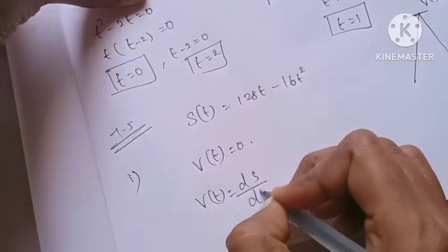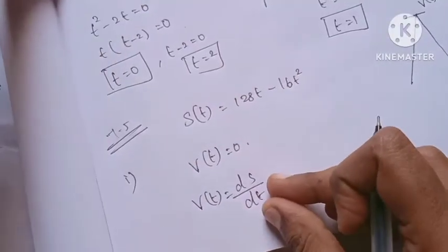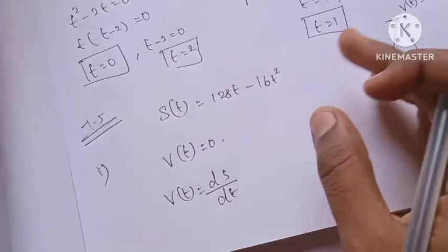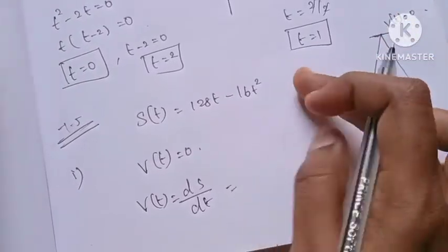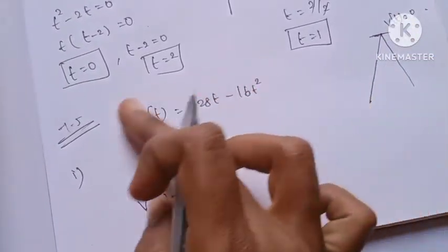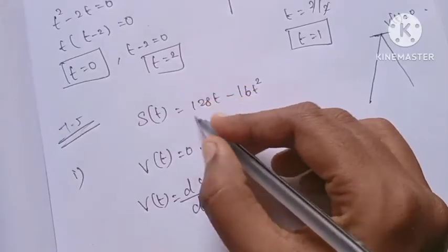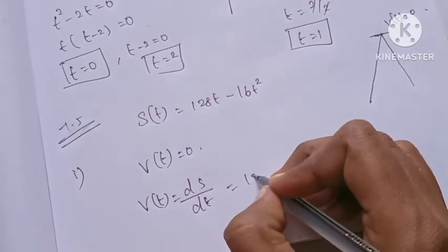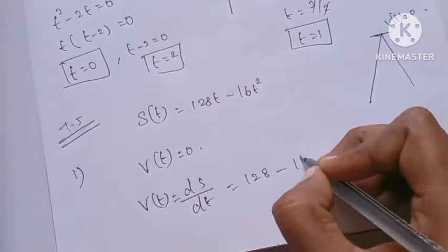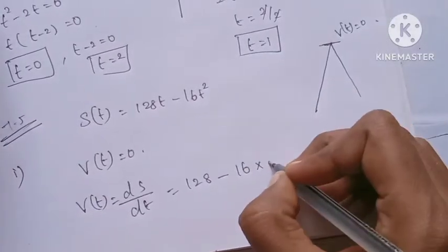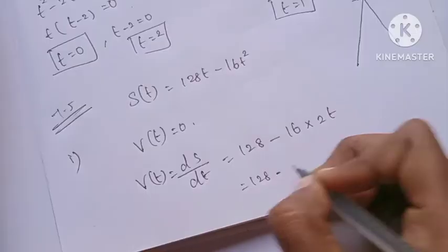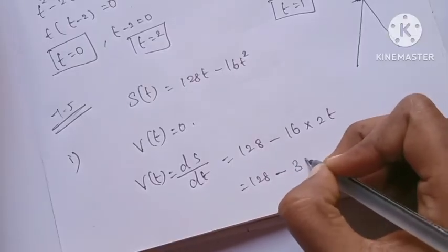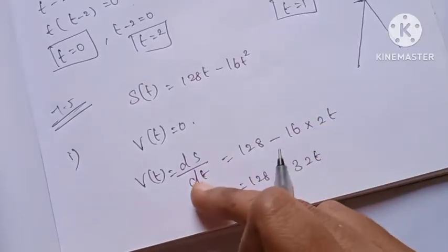To find the maximum height, we differentiate S of t. The derivative is: 128 — the derivative of t is 1, so that gives 128 — minus 16 times the derivative of t squared is 2t, giving us 32t. So ds/dt equals 128 minus 32t.